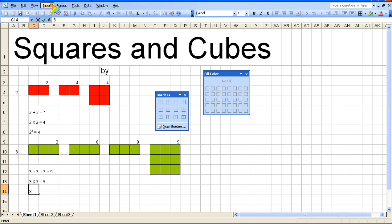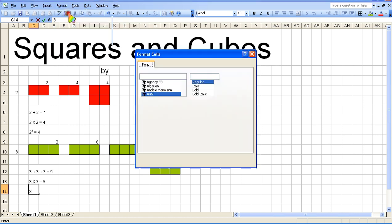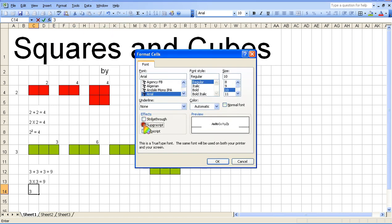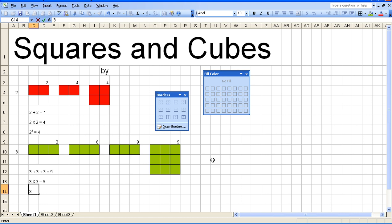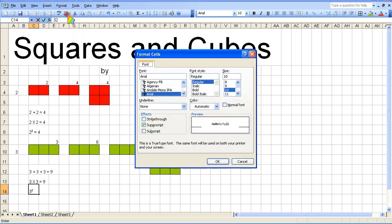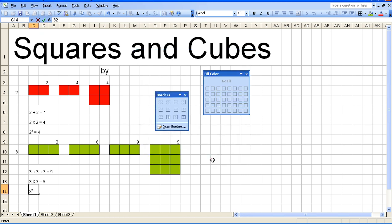Now I have to do it all over. Format, cells, superscript, OK. Type a 2, because it's 3 times itself, 3 times 3. Go back to format, cell, take away superscript, OK, space, equal, space, 9.